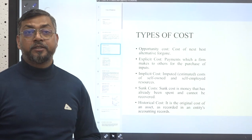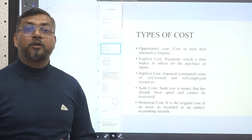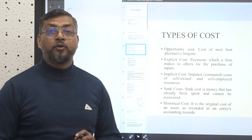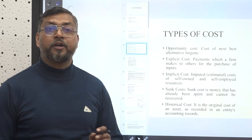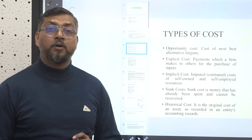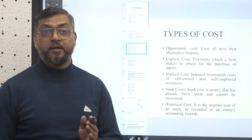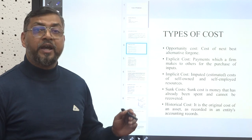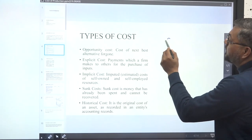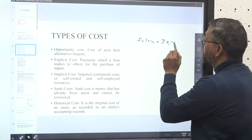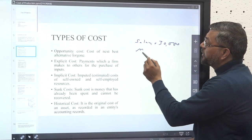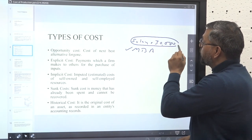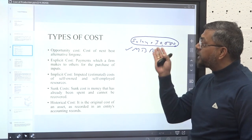The first cost we need to understand is opportunity cost. Opportunity cost is the cost of the next best alternative. If you have an option of doing MBA or going to a job after completion of your under-graduation, if you go to a job you have to leave the MBA option, and if you choose MBA you lose the salary from that job. Let's assume you get a salary of thirty thousand rupees — that salary becomes your opportunity cost because it is the next best alternative you skipped.